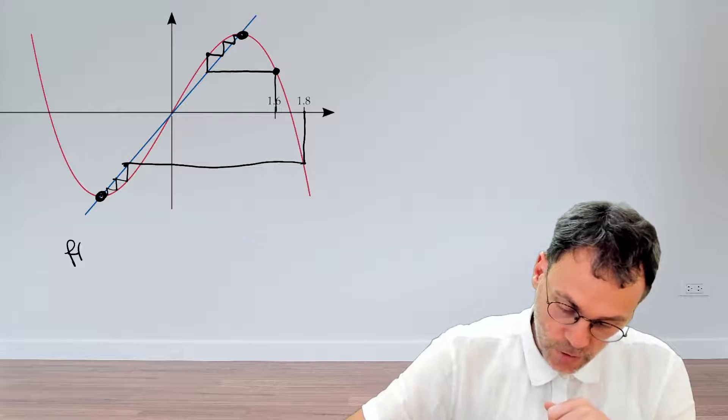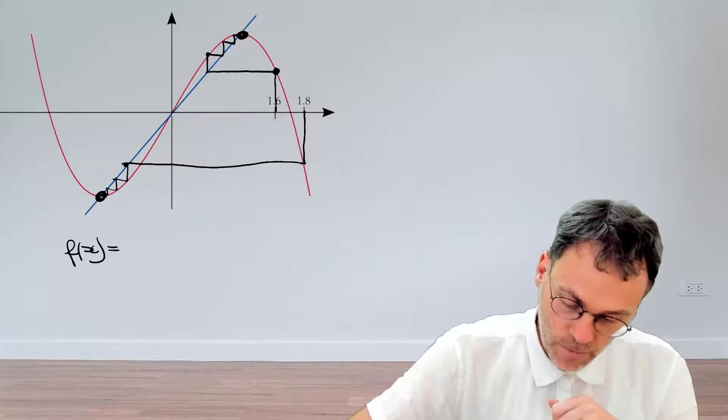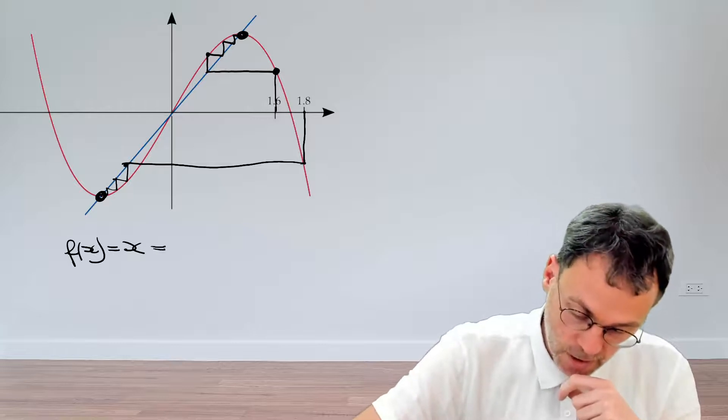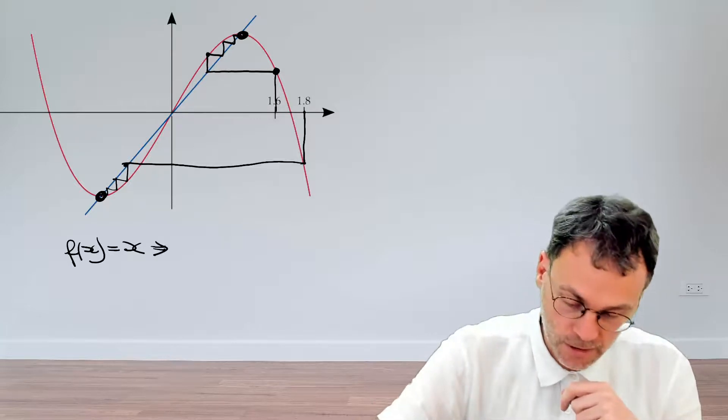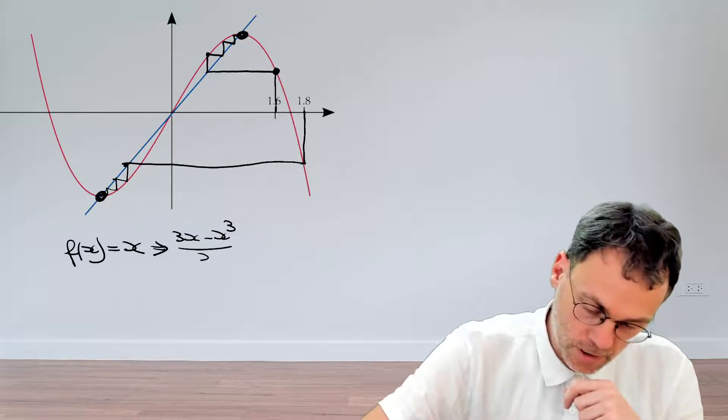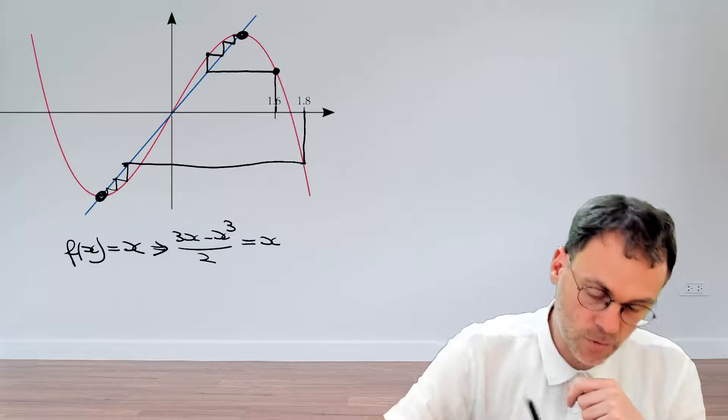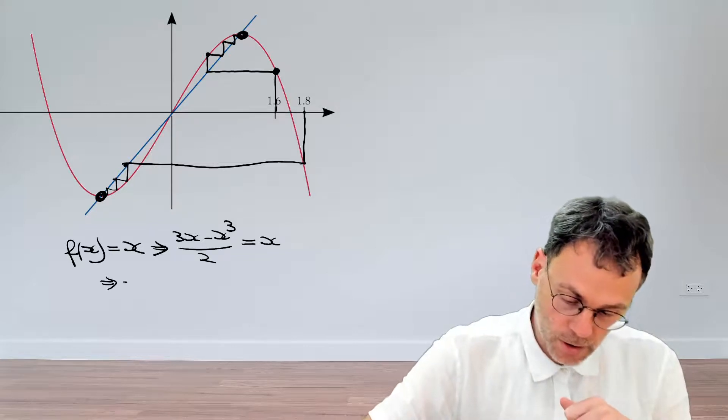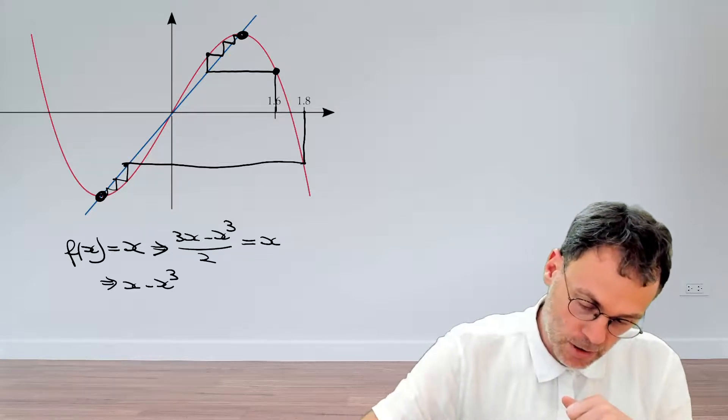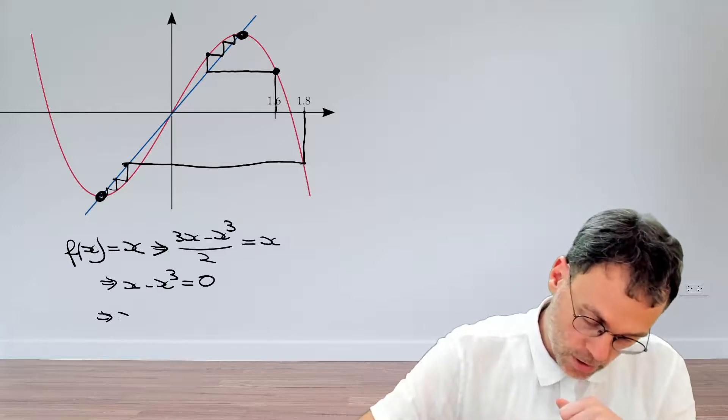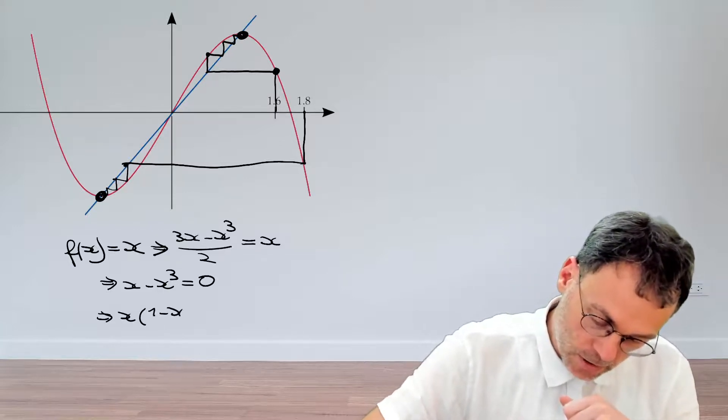For a fixed point, if we apply our map, nothing changes, so f of x equals x. In our case, f of x is 3x minus x cubed divided by 2, and that should equal x. So x minus x cubed equals 0, or x times 1 minus x squared